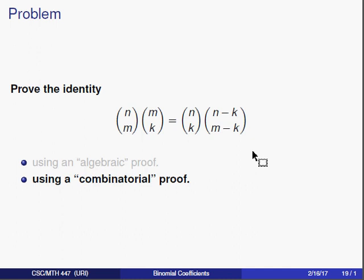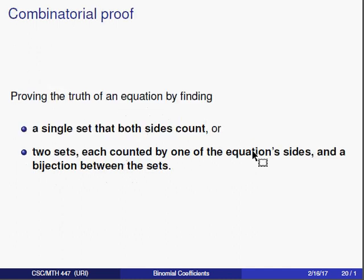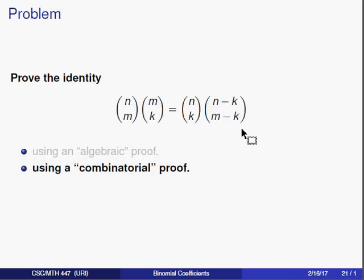Combinatorial proof is kind of a vague concept. There are multiple things that could be considered combinatorial proof, but in our class we're going to think of it in one or two particular ways. We'll be proving the truth of an equation. We will find a single set that both sides count, or possibly two different sets, each counted by one of the equation sides, but those two sets will have the same size. We're going to try and illustrate this first principle with this example.